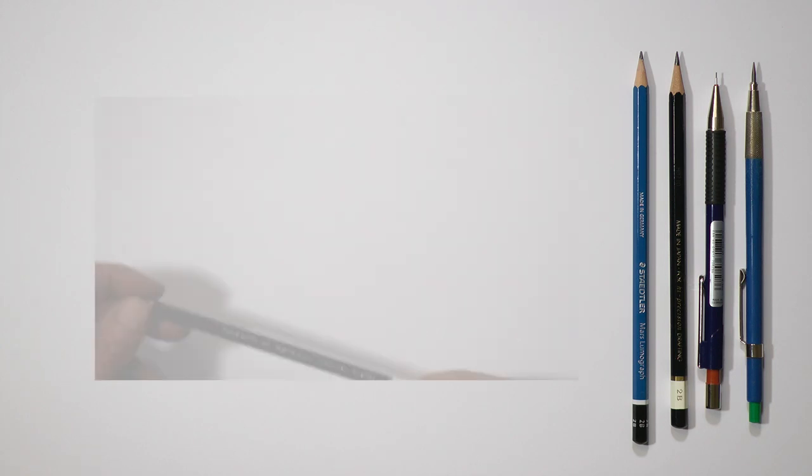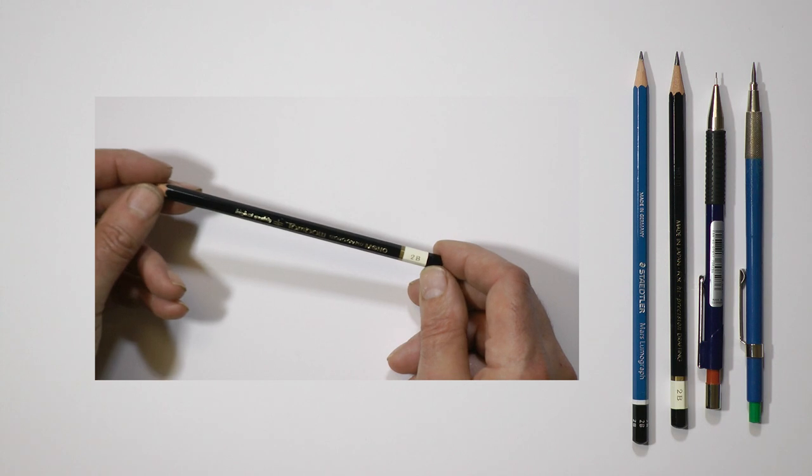There are 22 grades but most manufacturers make only 18 of those. Each grade has its own code such as this Tombow which is a 2B. The grades are split into two groups.